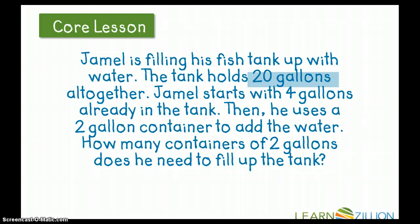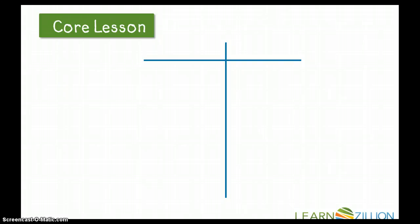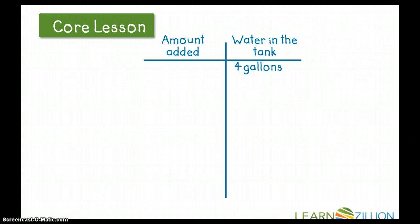First, I'm going to start with highlighting important information. The first thing I notice is that the tank holds 20 gallons altogether — that's the number I want to get to at the very end. Jamel starts with four gallons already in the tank, then he uses a two-gallon container to add the water. Let's set this information up on a T-chart. I have two columns: water in the tank and amount added. I already have four gallons in the tank, so I've added zero so far.